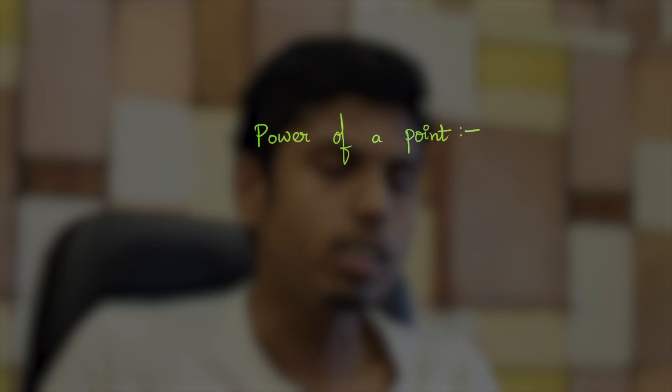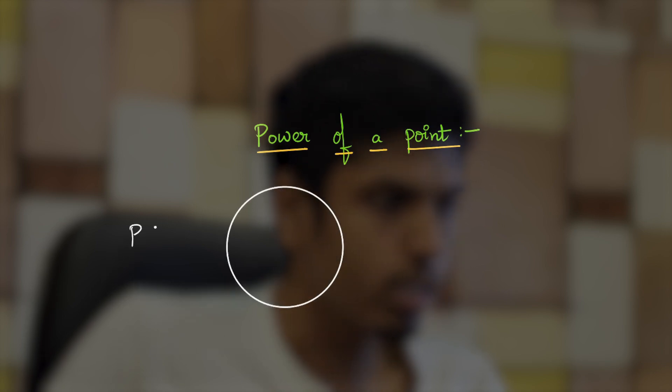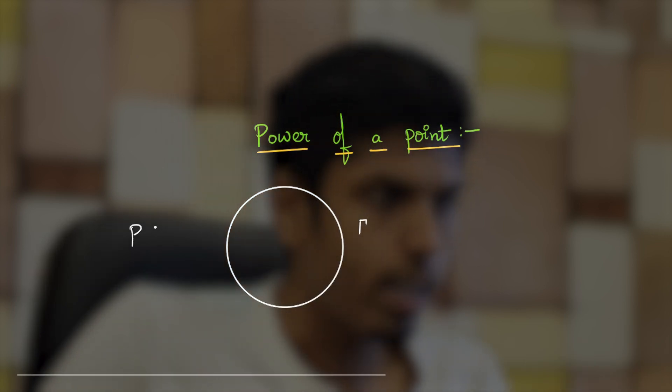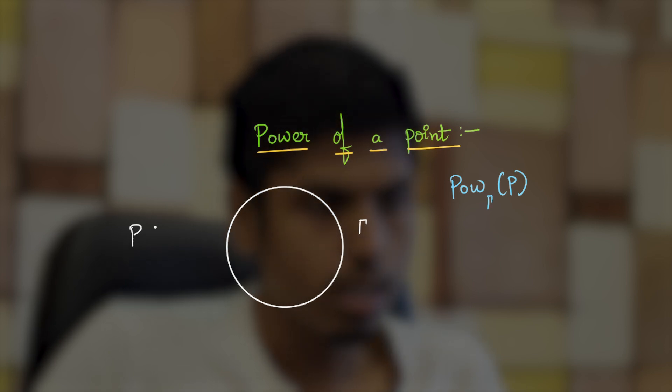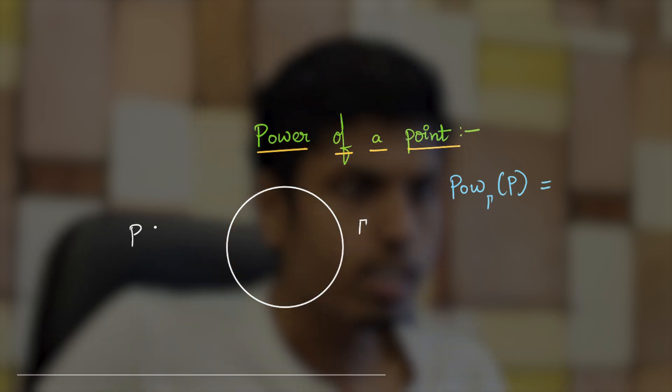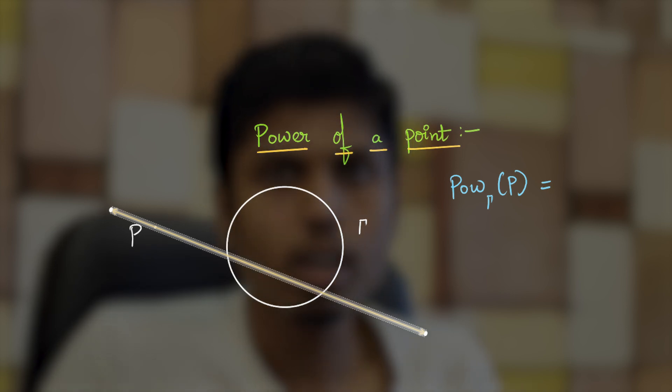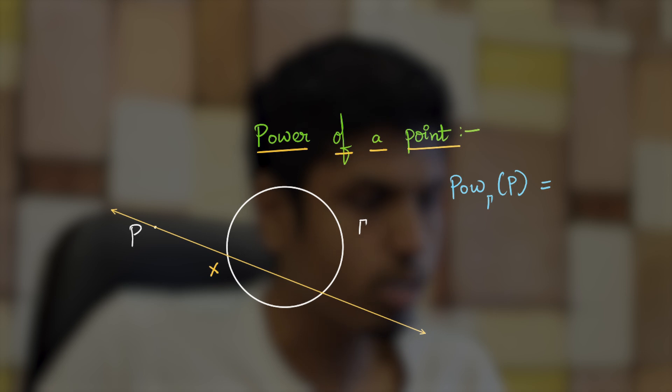Power of a point is a property of a point with respect to a circle. Let us mark a point on the plane along with the circle that may contain the point or may not contain the point. The power of this point P with respect to the circle gamma is defined as follows: Construct any line through the point P such that it intersects the circle gamma at two distinct points. It's a very easy construction. You may construct any line through P. It's not about some specific line.